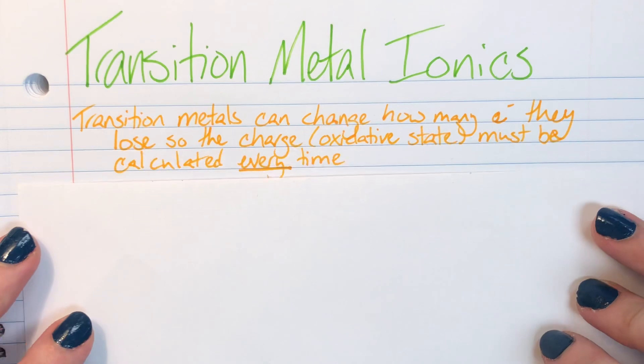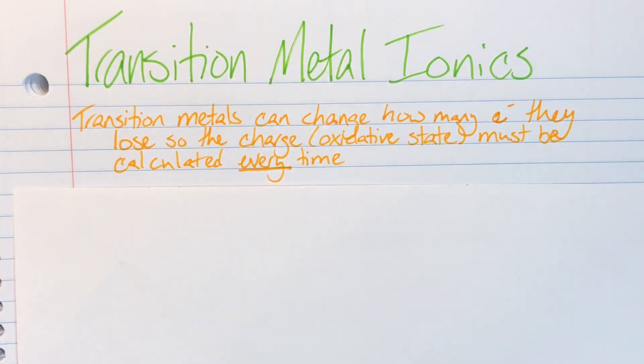With my transition metal ionics, it's important to know that my transition metals can change how many electrons they lose. So their charge, otherwise known as their oxidative state, has to be calculated every single time. The reason that they can change their number of electrons that they're going to lose is because of that d-block of electrons, which are close enough to the valence shell that they can also be taken. My transition metals are going to be able to change their oxidative state. So that means I have to figure out what their charge is every time, and I have to calculate that instead of just being able to look at the periodic table and figure it out.